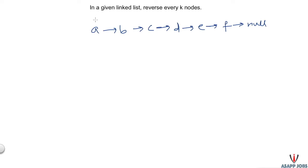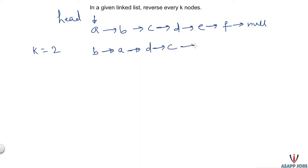Let's assume this is our given linked list where A is our head node, called 'head'. If k is 2, then our output should be: B points to A, A points to D, D points to C, C points to F, F points to E, and E points to null. So every two nodes are getting reversed - A and B, then C and D, and similarly E and F.